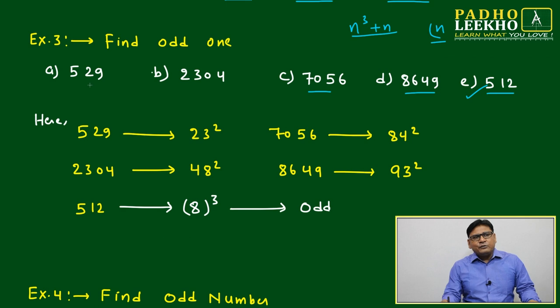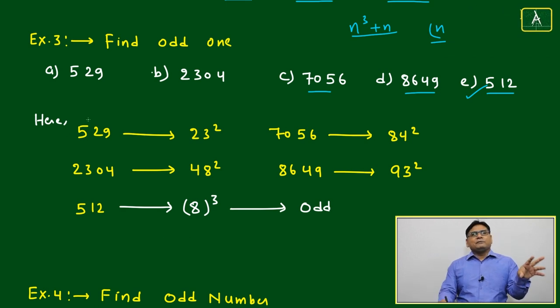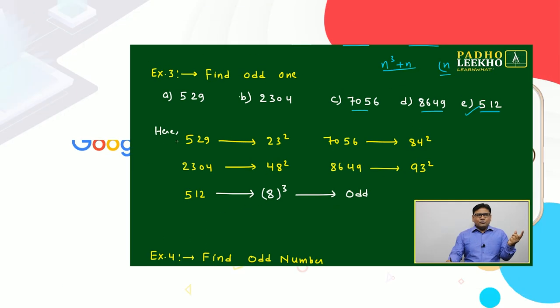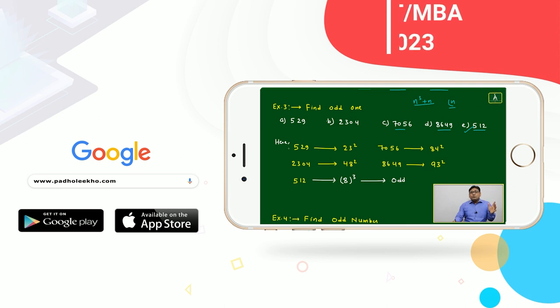Just by seeing itself 529, you will be able to confirm this is 23. Very frequently we are using, but 2304 you have to check. But if you are good in numbers, you will be able to predict very fast. Then all are perfect square numbers except 512.